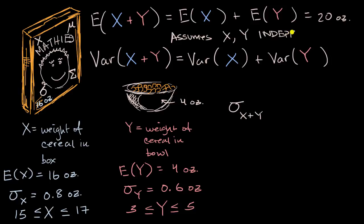In a future video, I'm going to give you, hopefully, a better intuition for why this must be true, that they're independent in order to make this claim right over here. And I'm not going to prove it in this video, but we could build a little bit of intuition. Here, for each of these random variables, we have a range of two ounces over which this random variable can take, and that's true for both of them.